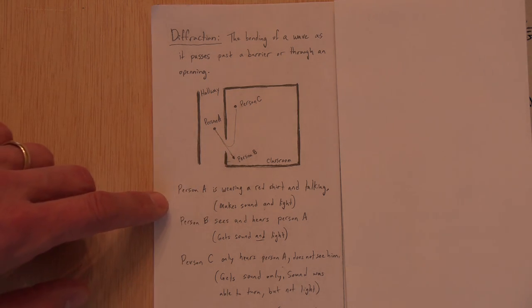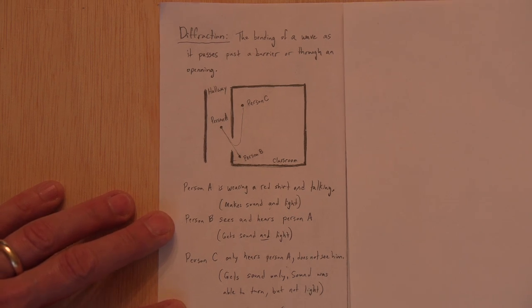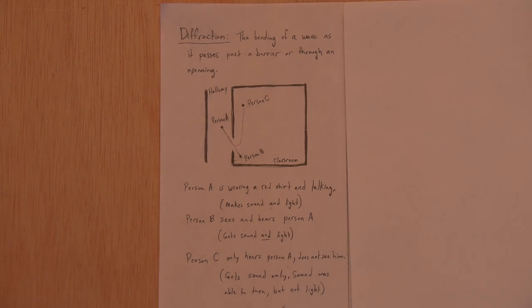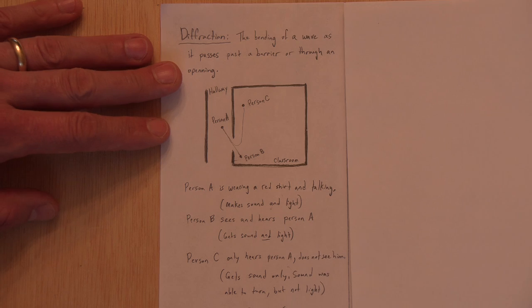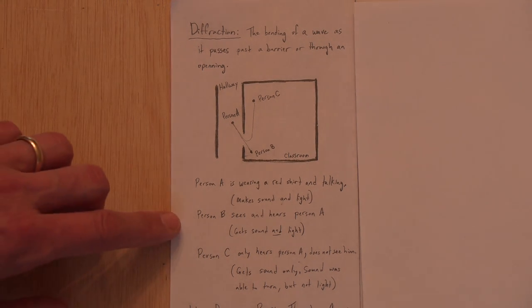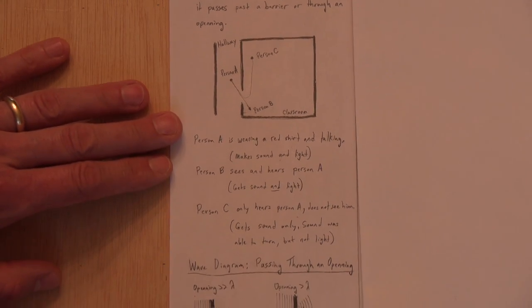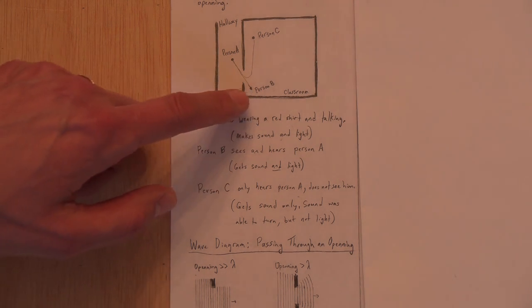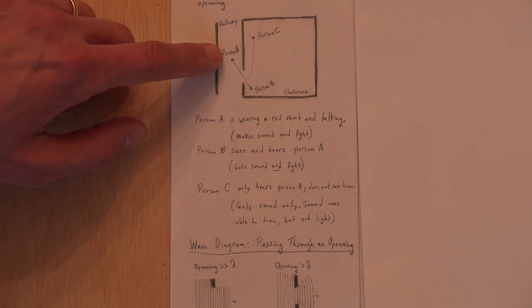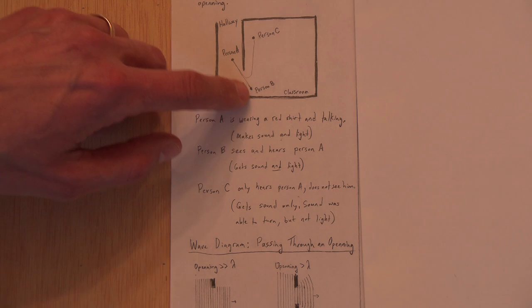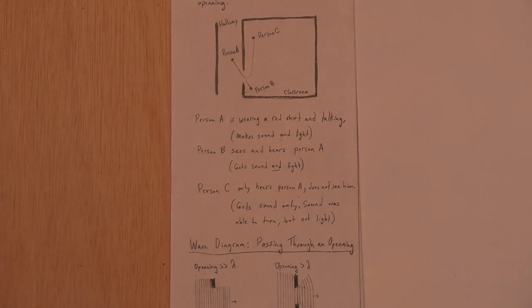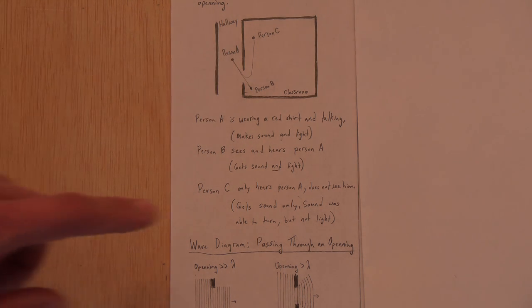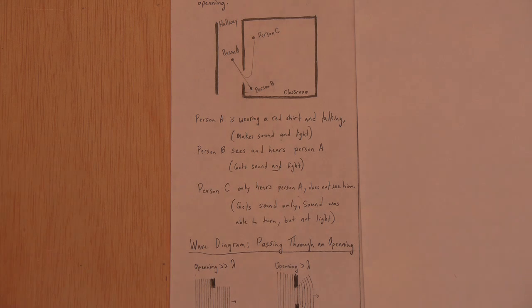And let's suppose person A, that's me, I'm wearing a red shirt and I'm talking. So I'm making sound and I'm making light. Person B over here, they see and they hear me. So they could look out the door and I'm standing here around the corner. But because it was a straight line, they could see me. And they could hear me talking. So they get both my sound and my light.